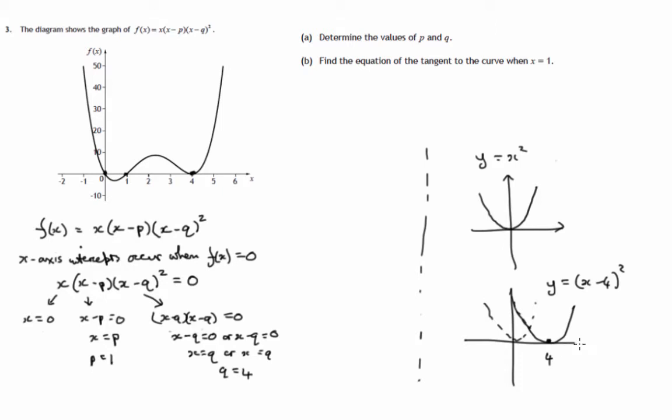But this quadratic graph touches the x-axis when x equals 4. And there's a squared factor, x minus 4 times x minus 4. But if a curve comes down and touches the x-axis, then you know there's a repeated factor associated with it. In this case, x minus 4 times x minus 4. So we've got the two values.